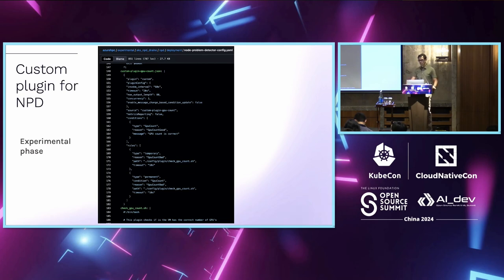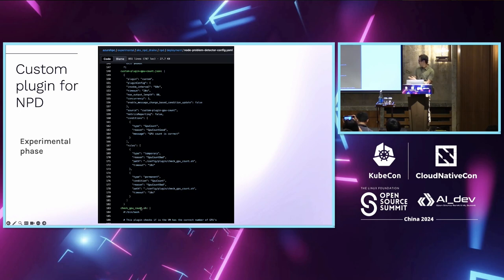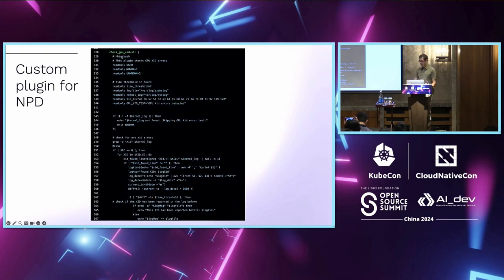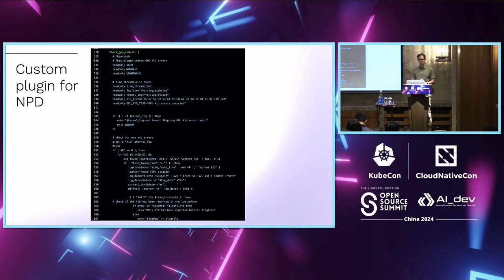This is a custom plugin for Node Problem Detector that leverages those health checks to run regularly during the node lifecycle. NPD has configuration to specify the script you want to run — for example, checking GPU counts. You can configure timeouts for health checks and how frequently they run. Another script example looks at a variety of XID errors that are defined there and can be modified. Based on this, NPD creates node conditions on the node and generates events based on health check results. These custom plugins allow you to do GPU-specific checks.